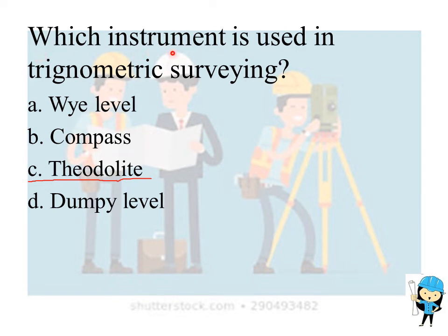Which instrument is used in trigonometric surveying? The answer is the theodolite. The compass is used to find the direction. Dumpy level is used to find the height of the land masses.